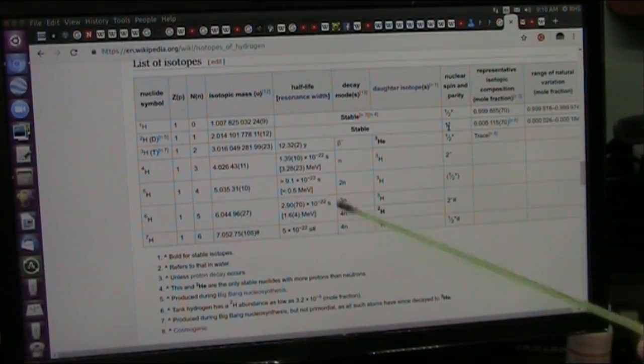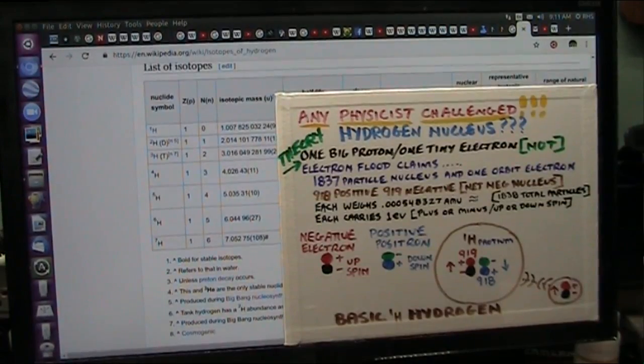There's not a physicist on the planet that can tell me how hydrogen works. None. If you can come to me about hydrogen and explain to me how one gigantic proton attracts one tiny little electron and keeps it away from itself without sucking it in, you can come up with all the dark spooky entangled nonsense you want. It does not work. I have the theory that does work and I want somebody to challenge it.